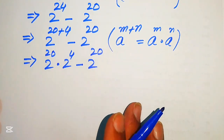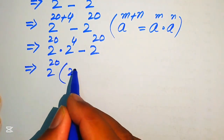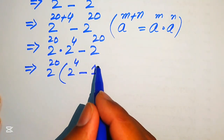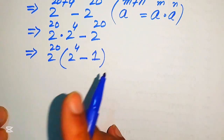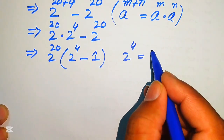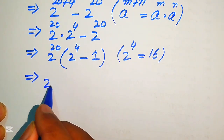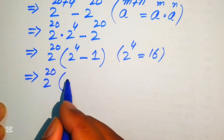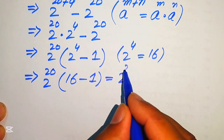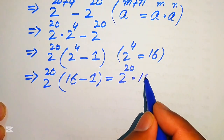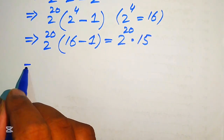Now we take 2 to the power of 20 as a common factor, and we get 2 to the power of 20, multiplied by the quantity 2 to the power of 4 minus 1. We know that 2 to the power of 4 equals 16, so we replace it: 2 to the power of 20, multiplied by 16 minus 1, which gives 2 to the power of 20, multiplied by 15.